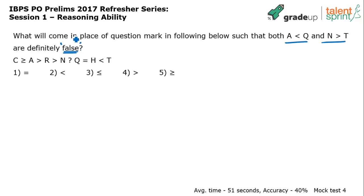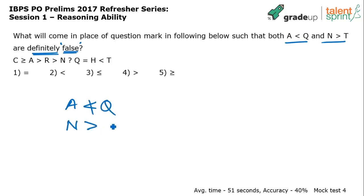A lot of you have considered the conditions to be true — you assumed they should be true — but the question says these two should be false, definitely false. 'a should not be greater than q' and 'n should not be greater than t.' By putting what in place of the question mark will these two happen? a should not be less than q and n should not be greater than t.